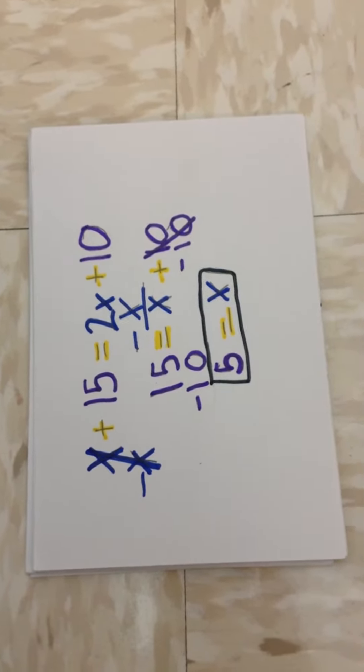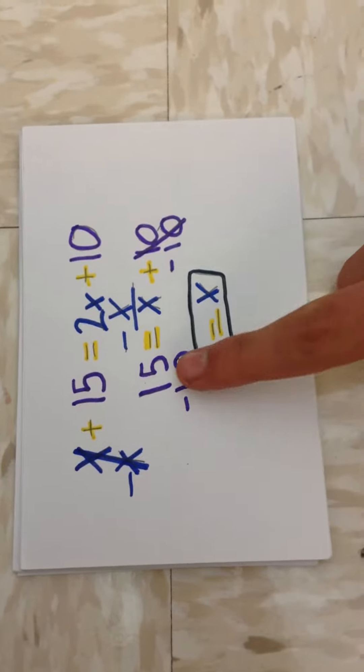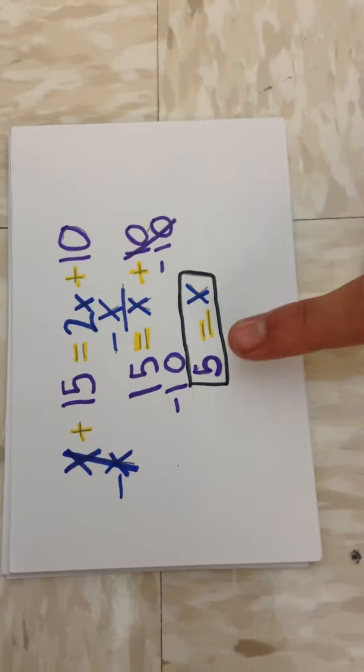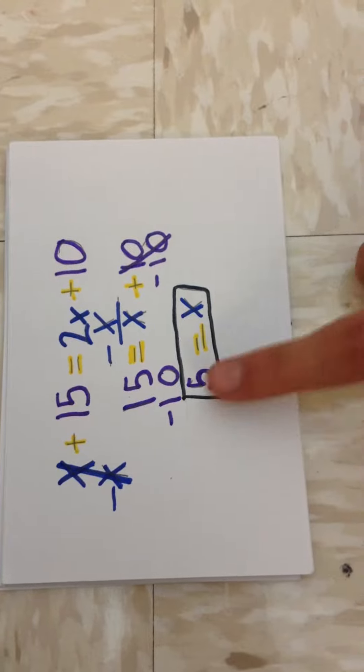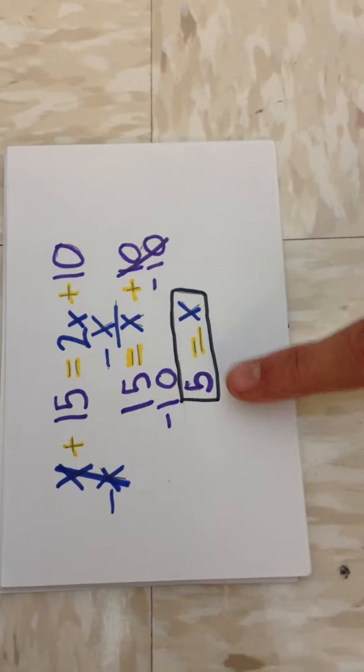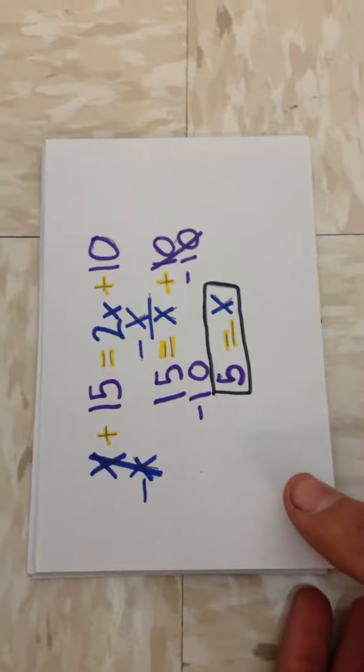So to start solving the equation, we subtract 1x from each side, and then we get 15 equals x plus 10, and then we can subtract 10 from each side, so that we get 5 equals x. And that is the only solution for this equation.